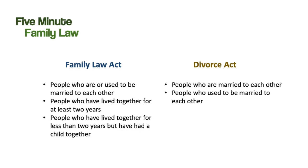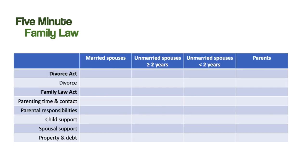The Family Law Act also talks about people who have lived together in a marriage-like relationship for less than two years but have had a child together, and it talks about people who are parents or guardians. So if you are a married spouse, the Divorce Act applies to you, and so does the Family Law Act — meaning you're entitled to ask the court for orders about divorce, parenting time and contact, parental responsibilities, child support, spousal support, and property and debt. If you are an unmarried spouse who has lived with your partner for two years or more, the Family Law Act is the only act that applies to you, but you can ask for orders about parenting time, parental responsibilities, child support, spousal support, and dividing property or debt.